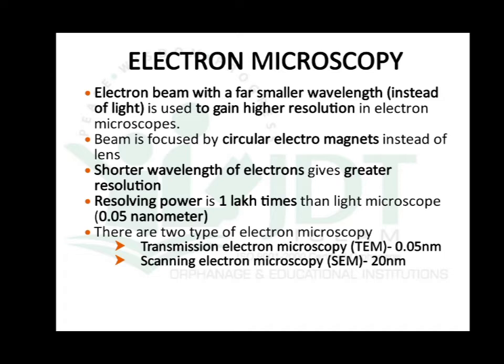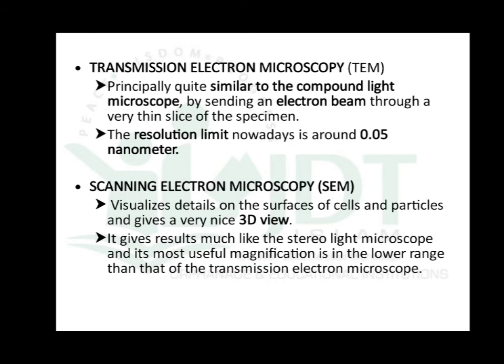There are two types of electron microscope: the transmission electron microscope (TEM) and the scanning electron microscope (SEM). The resolution power of TEM is 0.05 nanometer, and for the scanning electron microscope it is 20 nanometer.